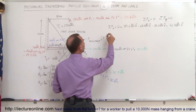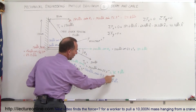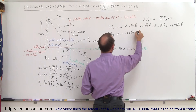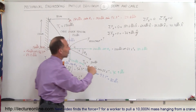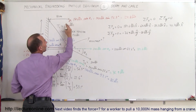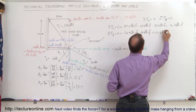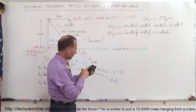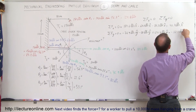Now summing the Y components, which also add up to zero. We have minus 76.9 pounds in the Y direction (downward), minus 80 pounds in the Y direction, and plus 124.8 pounds in the positive Y direction. So 124.8 minus 76.9 minus 80 equals minus 32.1 pounds in the Y direction.